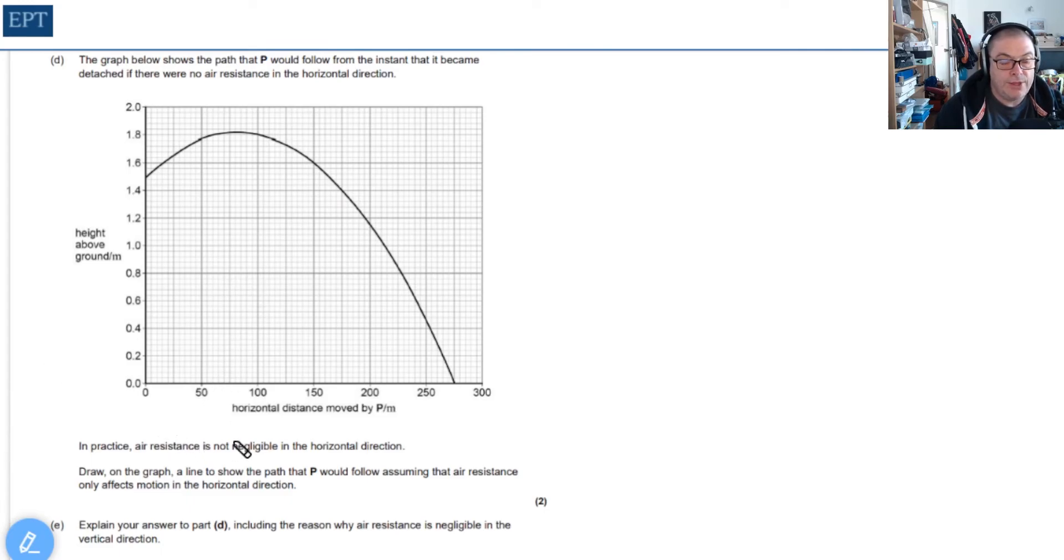Part D tells us the horizontal component of air resistance is significant (because the car's moving at 320 meters per second), but we can ignore the vertical component (it's only moving at 2.5 meters per second vertically). We're asked to draw how the line changes. It starts at the same point, and because the vertical component is unaltered, it gets to the same peak value. The actual magnitude stays just over 1.8, but because air resistance is pushing back on part P as it moves forward, it's going to slow down.